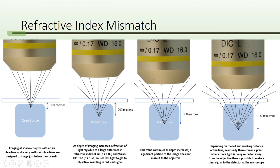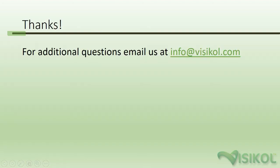For example, ideally an objective matched to a refractive index of 1.33 for water will be dipped in water and used to image a tissue that has been cleared with an aqueous clearing technique with a refractive index also of 1.33. When imaging a tissue, always try to match refractive indices for optimum imaging depth and image quality. For additional questions on confocal microscopy or 3D tissue imaging, please reach out to us at info@Visicall.com.